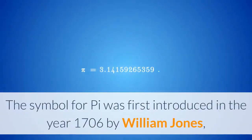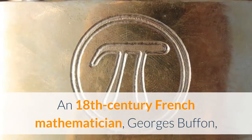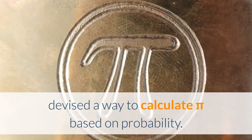The symbol for Pi was first introduced in the year 1706 by William Jones, an Anglo-Welsh philologist. An 18th century French mathematician, Georges Buffon, devised a way to calculate Pi based on probability.